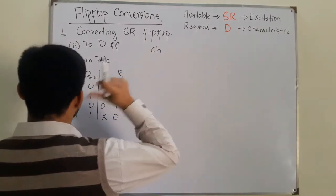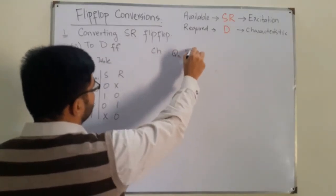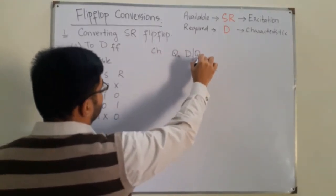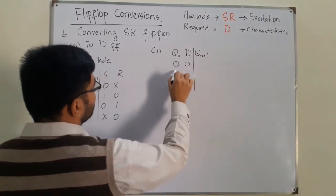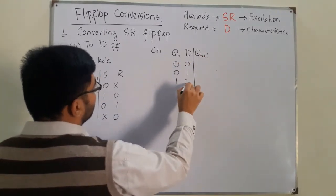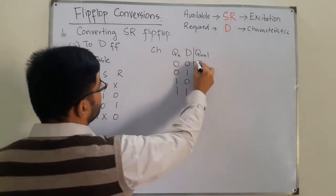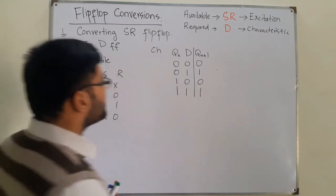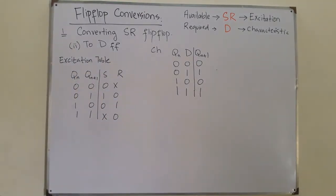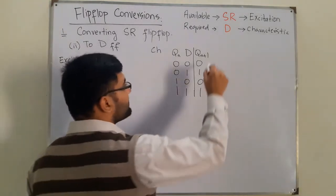We have the present inputs Qn and D, and we have the next output Qn+1. So we have 0 0, 0 1, 1 0, 1 1. The outputs are the same as D: 0, 1, 0, 1, because the D flip-flop is just used for a time delay. Now we'll be making changes to the characteristic table to make it the combinational table.